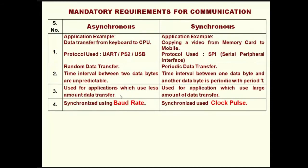Synchronous serial communication is synchronized through clock pulses. The notification for the data is the falling edge or rising edge of the clock pulse. Both the transmitter and receiver are connected through separate clock pulses in synchronous serial communication — there is a separate pin for clock and a separate pin for data.